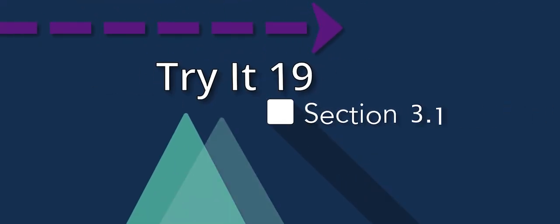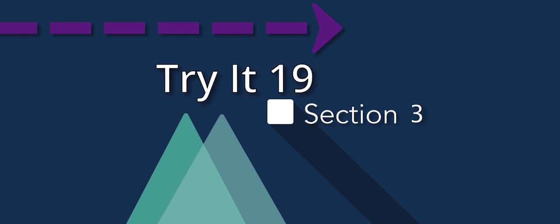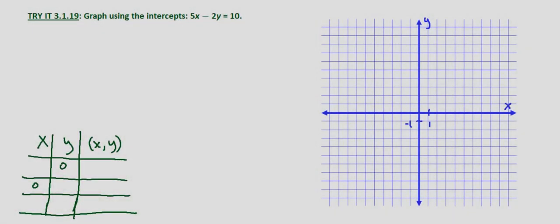Once again we're looking at graphing an equation using the intercepts. The process is essentially the same. We use y equals zero to find the x-intercept, we use x equals zero to find the y-intercept, and then we choose one other point for x or y. It doesn't matter which one we choose as long as we solve for the other variable. And then we plot the three points and connect the dots.